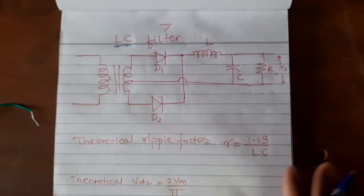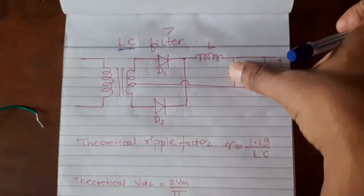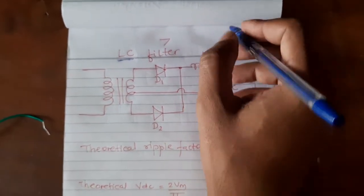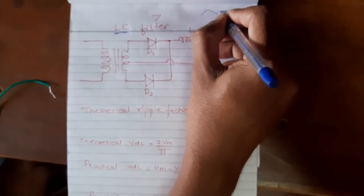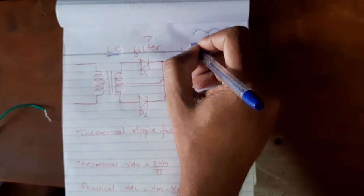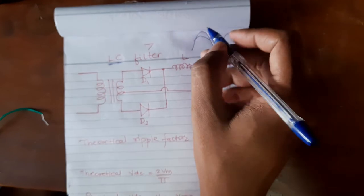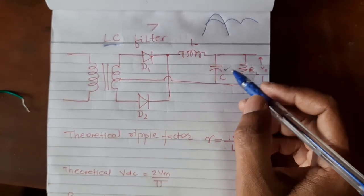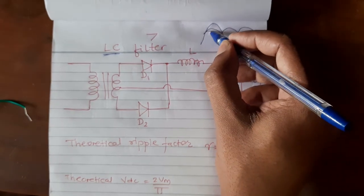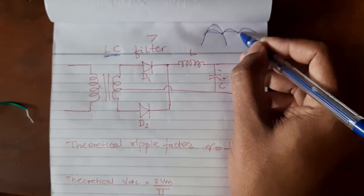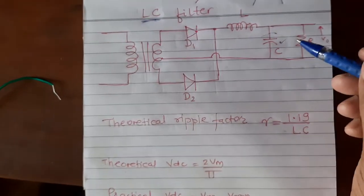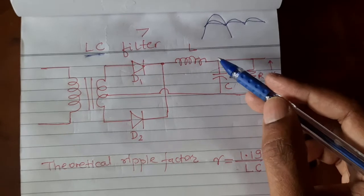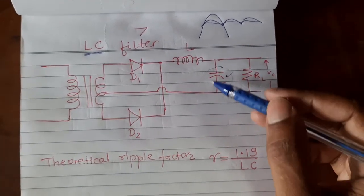If you have seen our previous video, if I remove this capacitor C, it is the same inductor filter setup. We saw across the load, when the inductor was there, we were getting output with a certain ripple waveform. Now what we are doing is connecting an extra capacitor across the load resistor. The capacitor will again reduce the ripple to a lower value, and hence the output will have less ripple. The inductor filter reduces the ripple and then again this capacitor filter will reduce it more.